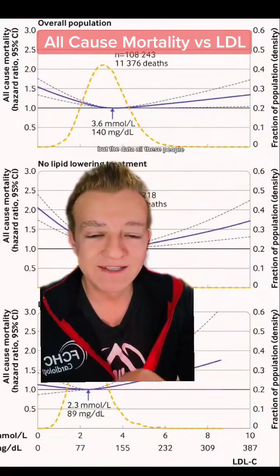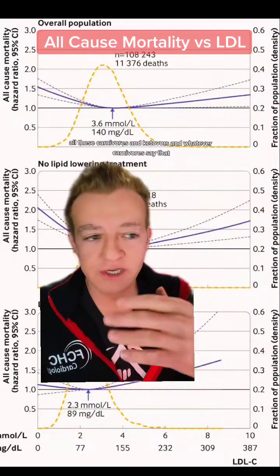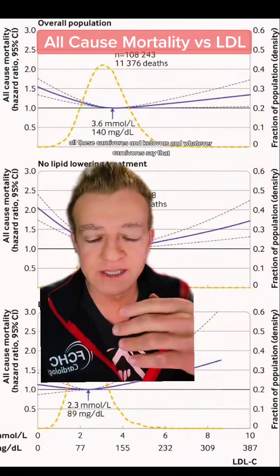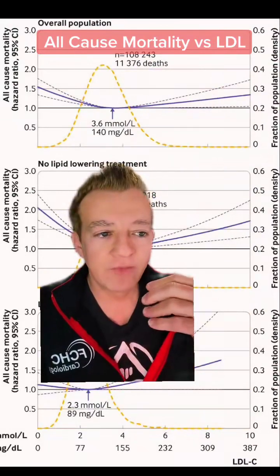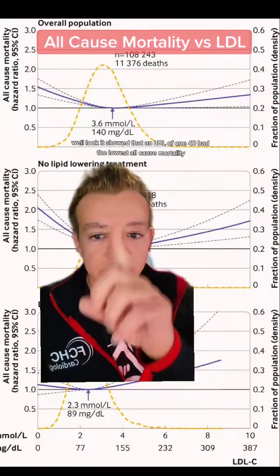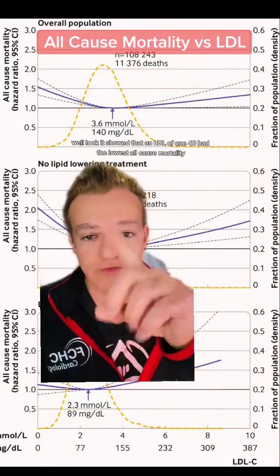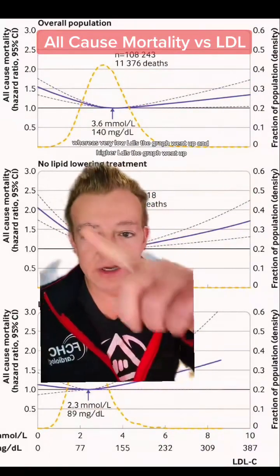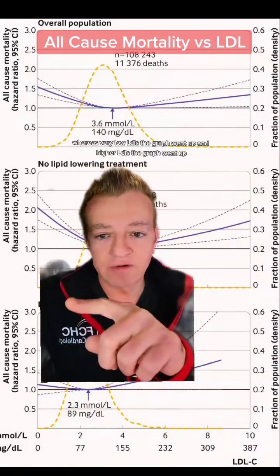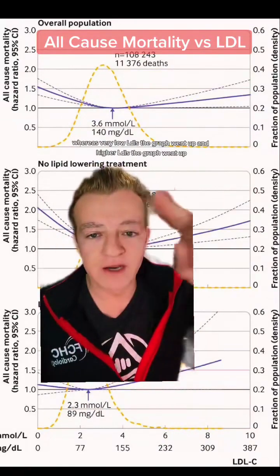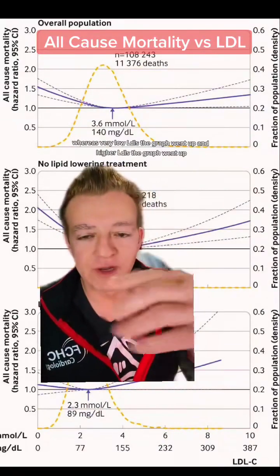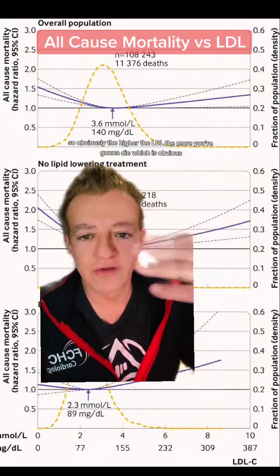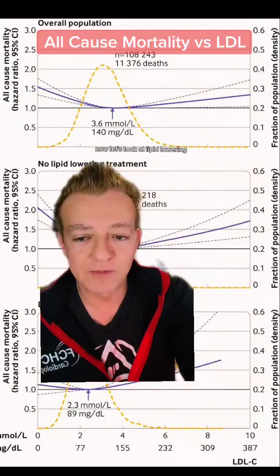All these carnivores and ketovores and whatever clownivores say that, look, it showed that an LDL of 140 had the lowest all-cause mortality, whereas very low LDLs the graph went up, and higher LDLs the graph went up. So obviously the higher the LDL, the more you're going to die — which is obvious.